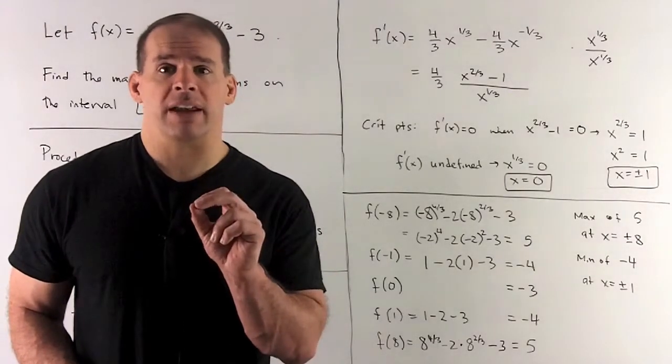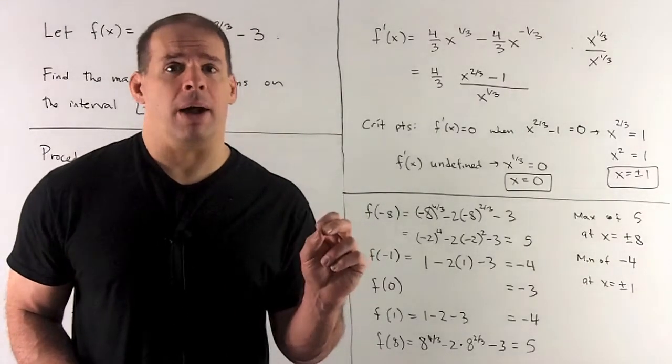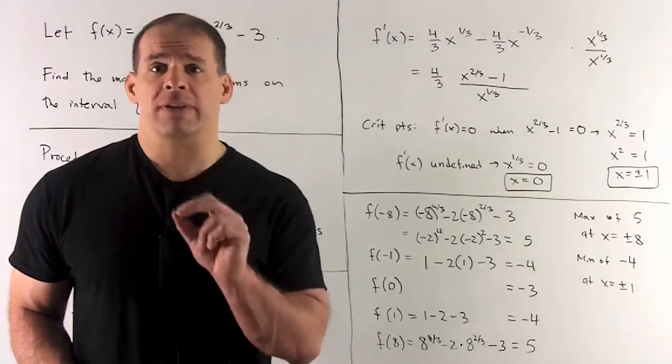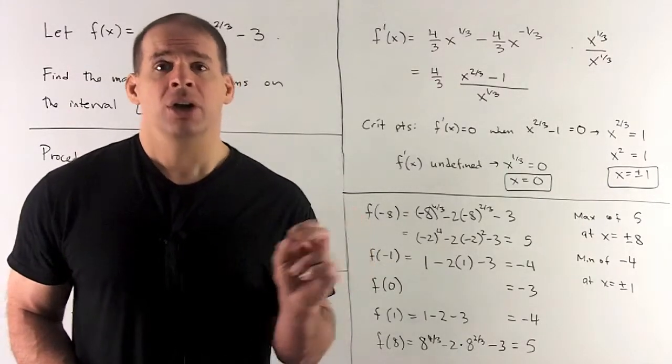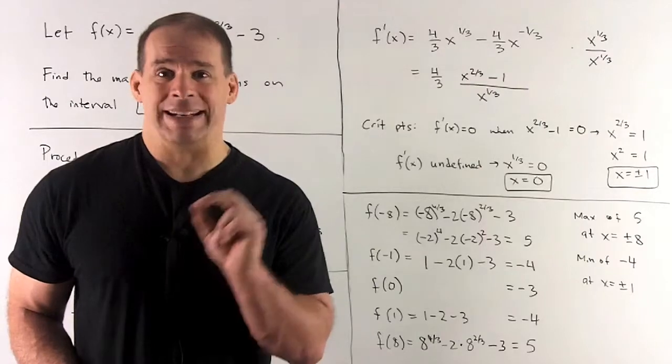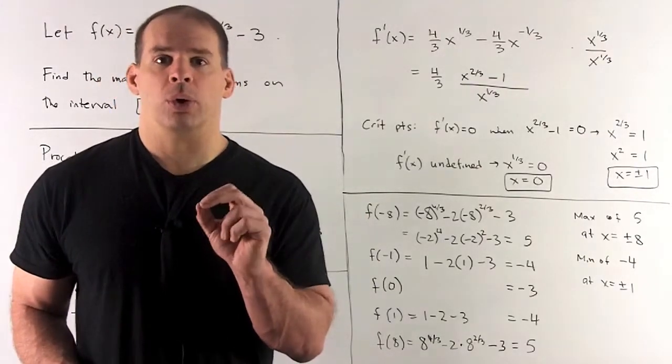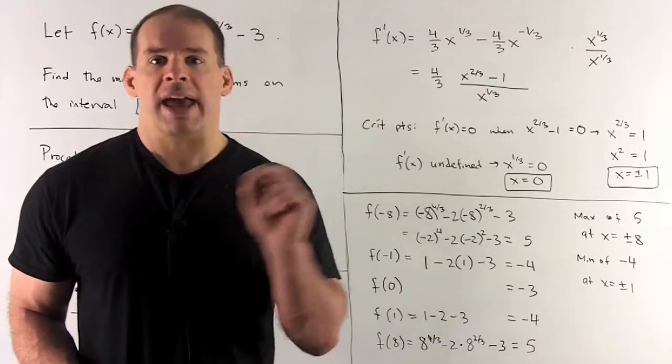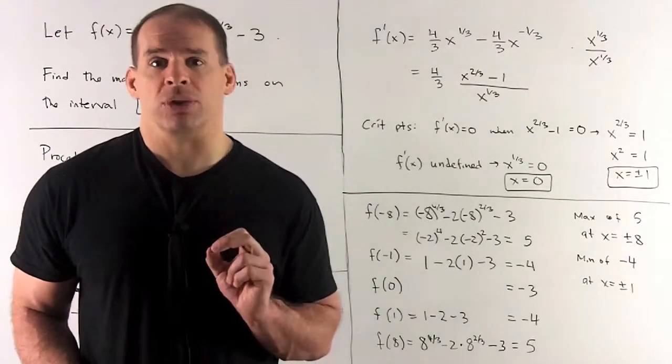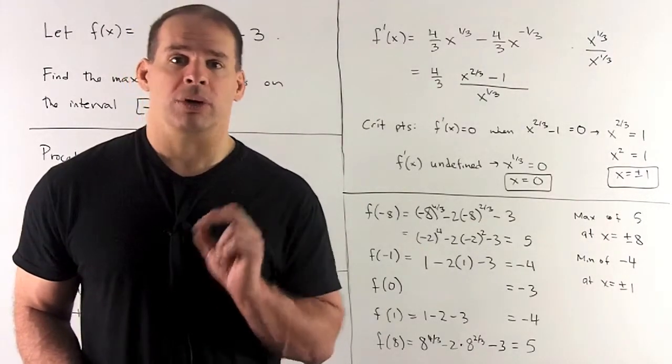If I have (-8)^(1/3), if I take a cube root of a negative number, I get a negative number out. If I took a square root of a negative number, there's no answer. Cube root of a negative number, I definitely get something back. So we're looking at the cube root of -8. I'll have a negative sign, and then I just have to worry about what the cube root of 8 is. Cube root of 8 is 2.